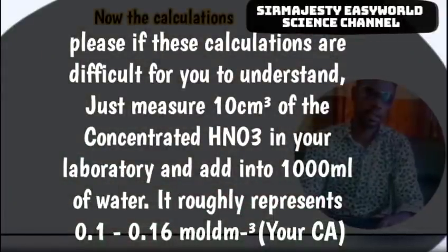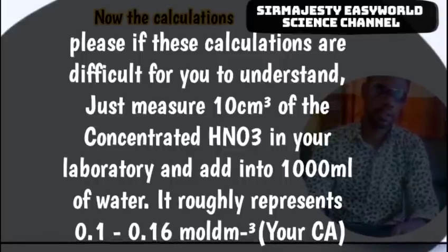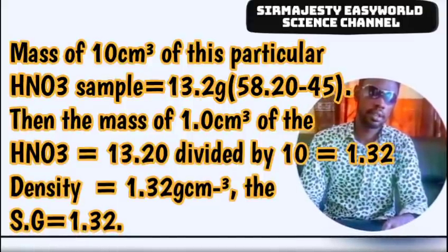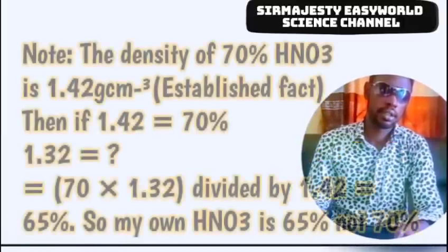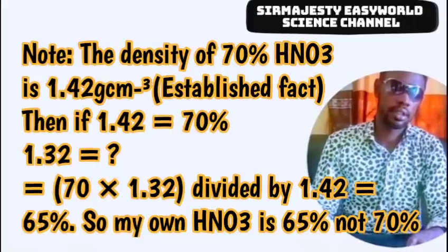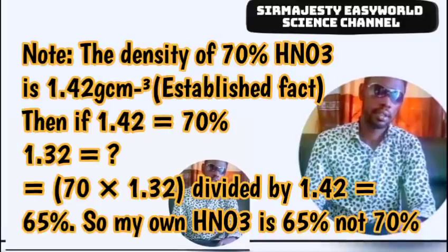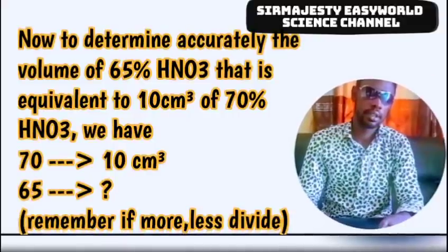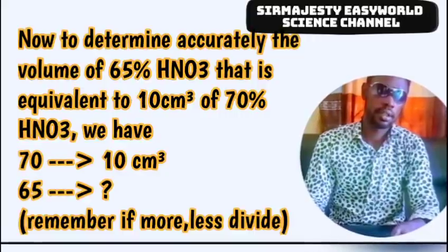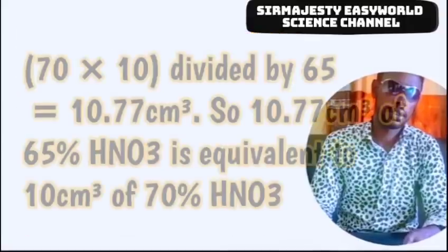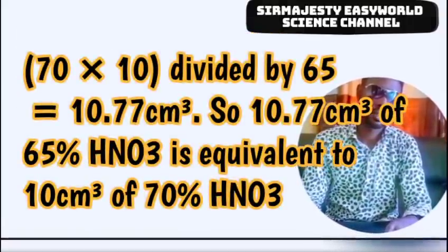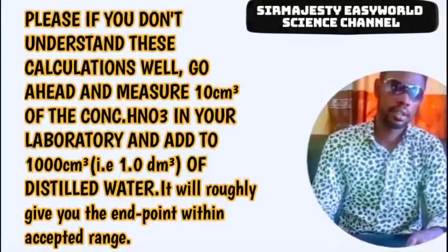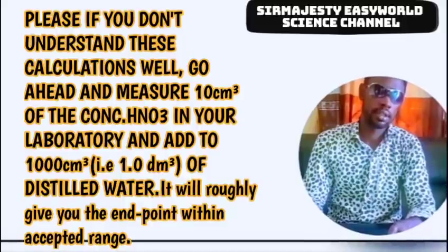From the data collected — 58.2 grams for both the 10 ml HNO3 and the measuring cylinder — you can calculate the specific gravity, density, or relative density. This is necessary to verify the values you are using, in case the label on the HNO3 is incorrect. From knowing the density of an acid, you can invariably determine its concentration. The steps are clear and mathematically correct.